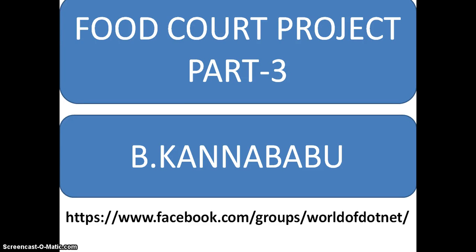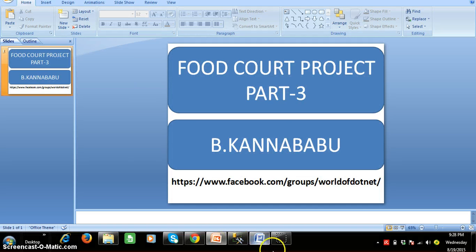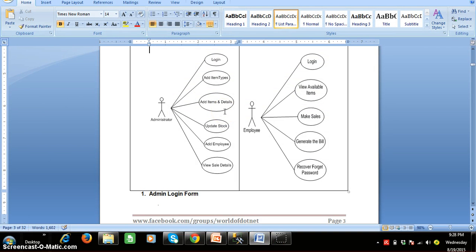Hi, this is Kanababu. This is the continuation of part 2. In our food code project, basically there are two types of users: one is administrator and the other is employee. The role of administrator is to log in, add item types, add items, update the stock, add the salesperson, and view the sales details.